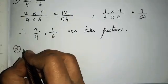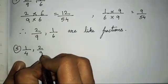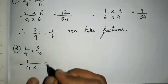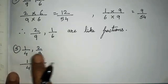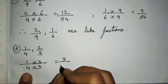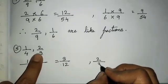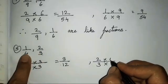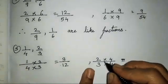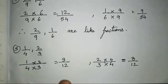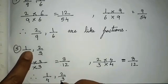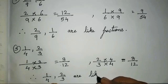The fifth sum is 1 upon 4 and 2 upon 3. In the 4s table 3 will not come and in the 3s table 4 will not come. So we cross multiply — multiply these numbers with each other. First fraction multiplied by 3: 1 three is 3, 4 threes are 12. Second fraction multiplied by 4: 2 fours are 8, 3 fours are 12. Now the denominators are common, therefore the given fractions are like fractions.